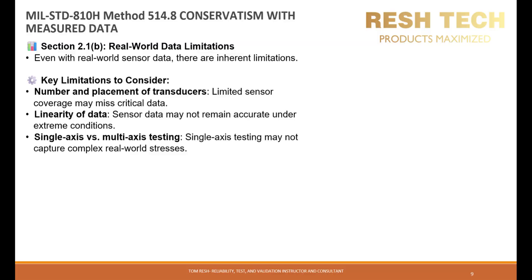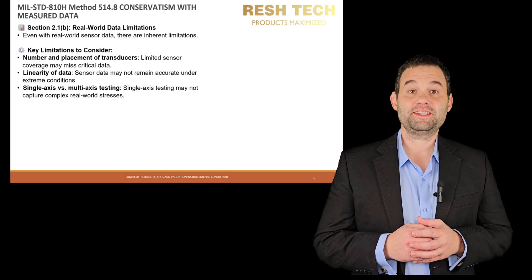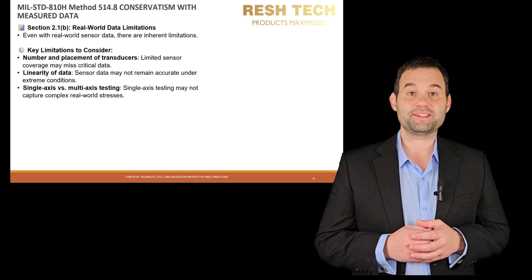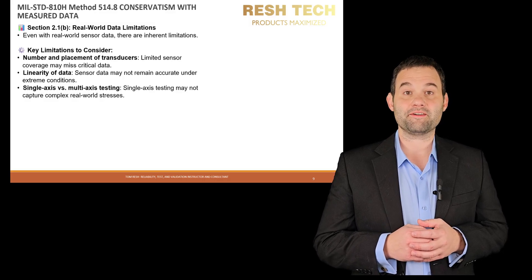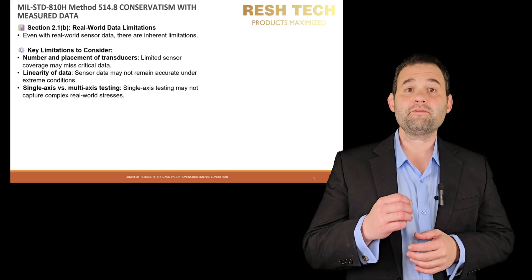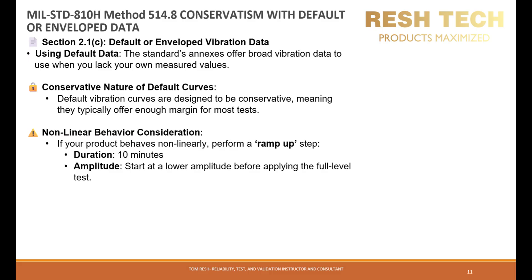Let's look at conservatism with measured data. Section 2.1b reminds us that even if we have measured data from sensors in real-world conditions, there are always limitations: the number and placement of transducers, the linearity of data in extreme conditions, single-axis versus multi-axis, and so on. To be safe, the standard recommends using margins in your tests. If you have enough field test data, you can use statistical methods as outlined in Annex F. Annex F can be leveraged to determine how much test margin you will need.